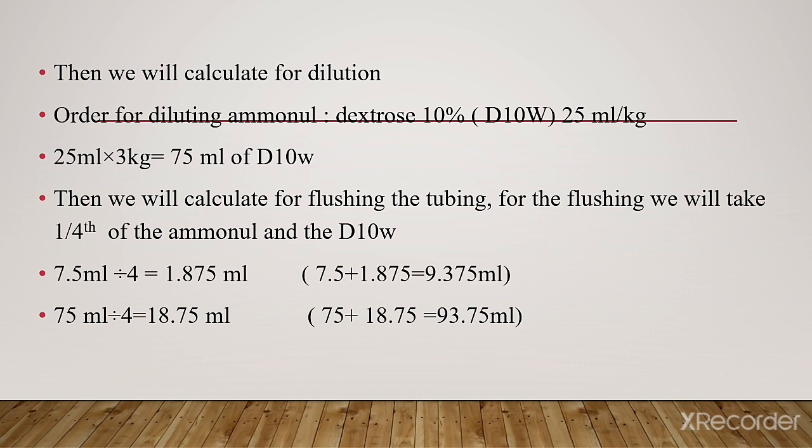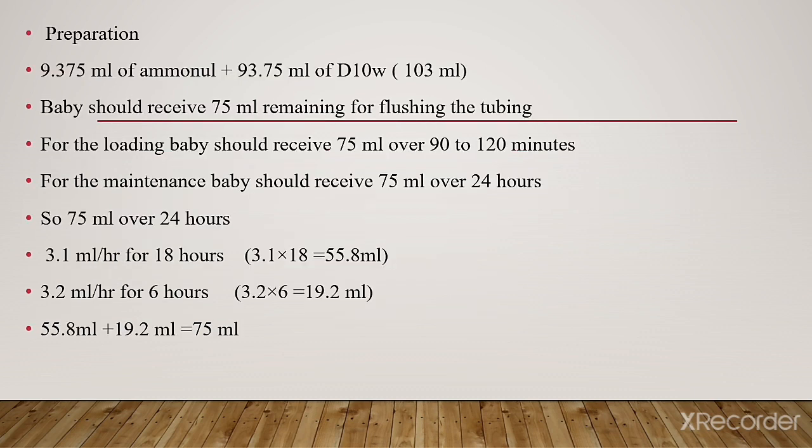75 ml of dextrose divided by 4 for flushing gives 18.75 ml. So total dextrose: 75 ml plus 18.75 ml equals 93.75 ml. Preparation: 9.375 ml of aminol plus 93.75 ml of dextrose equals 103 ml total. However, the baby should receive 75 ml, with the remainder for flushing the tubing.